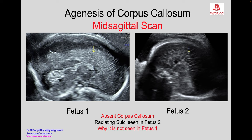Whereas in fetus one, this sign — the radiating sulci or the sunburst sign — is not seen. Why is it not seen in fetus one?